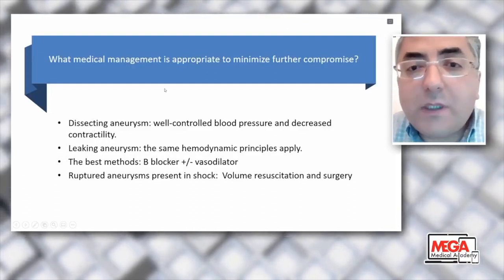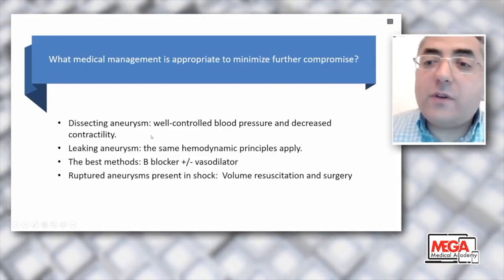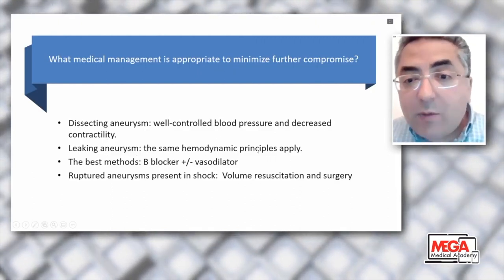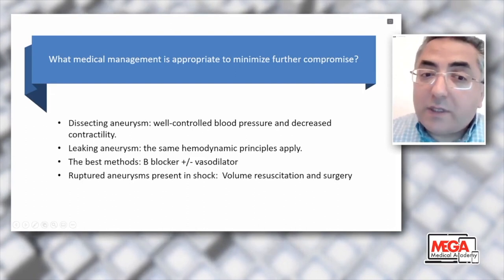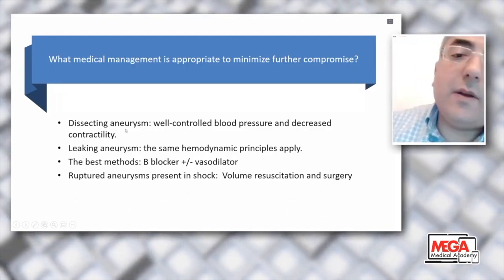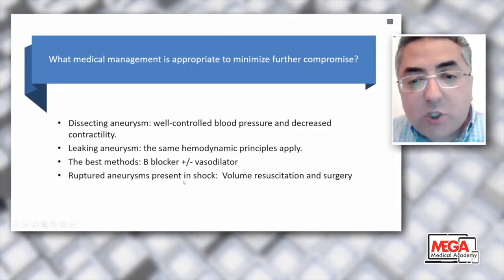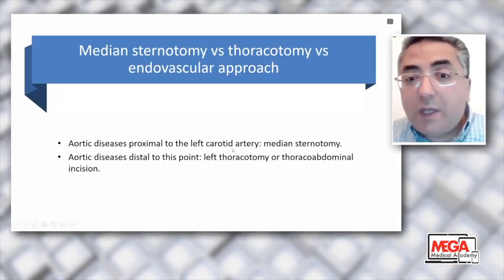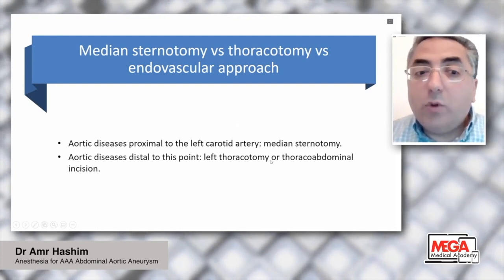Medical management should target preventing further deterioration. For a dissecting aneurysm, well-controlled blood pressure and decreased contractility are very important. A leaking aneurysm follows the same hemodynamic principles: decrease heart rate and blood pressure — use beta-blockers as first line, plus or minus vasodilators. Never use vasodilators alone for hypertension, as this leads to reflex tachycardia and further deterioration. A ruptured aneurysm is a special entity requiring volume resuscitation and emergency surgery.